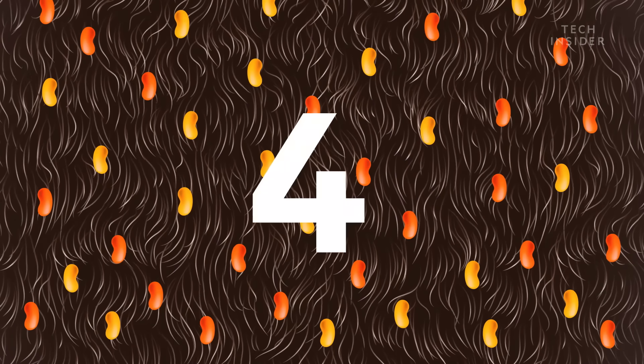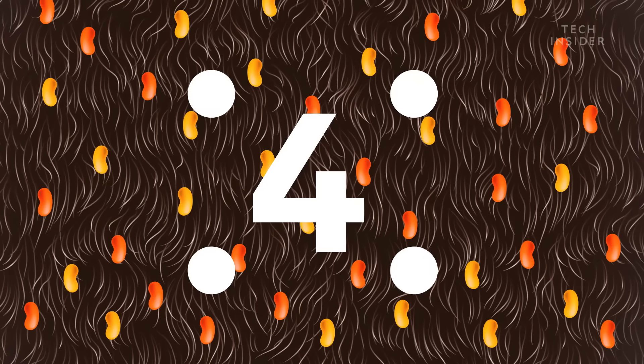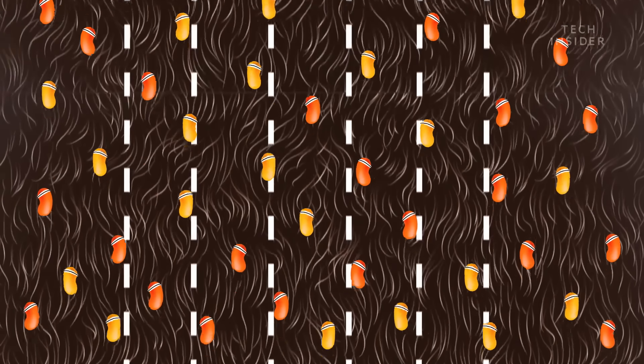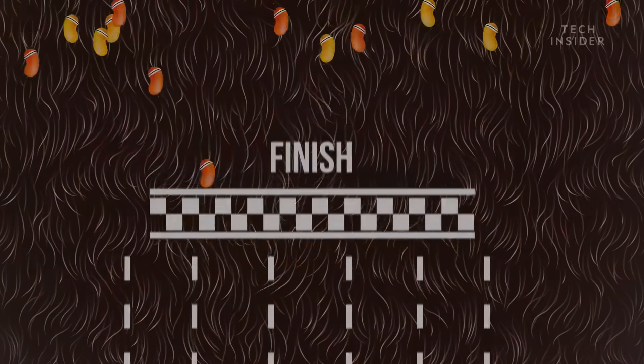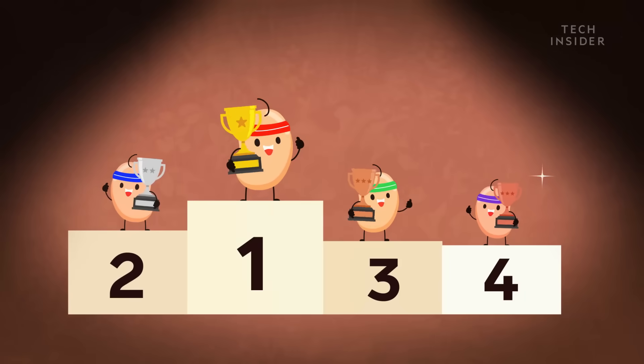But there's a catch. Mom has only four nipples in her pouch. So right from birth, the joeys are literally on a mad dash for their lives. And only the strongest four will make it. Talk about sibling rivalry, huh?